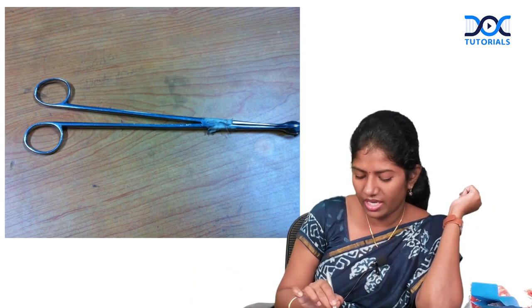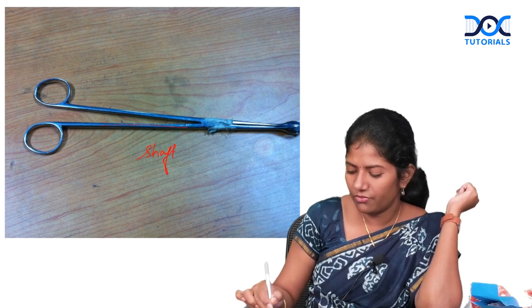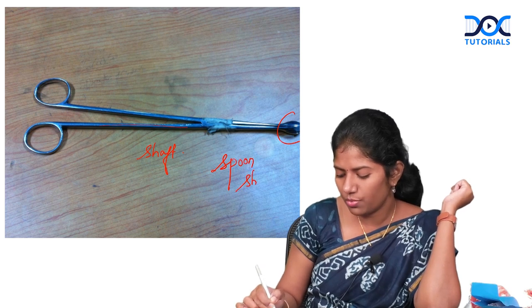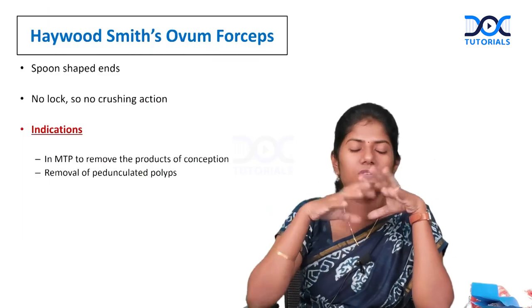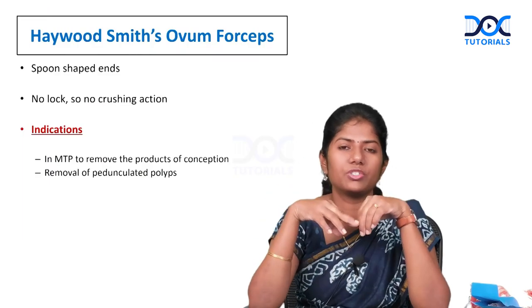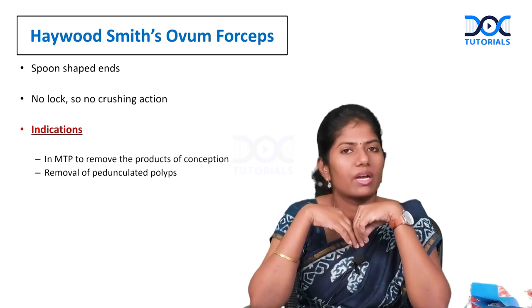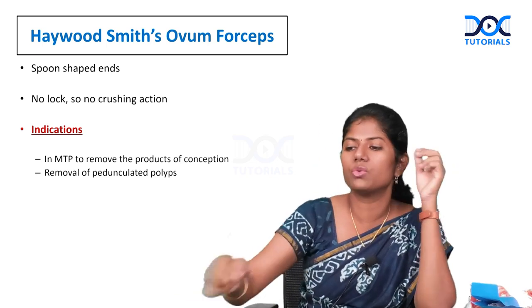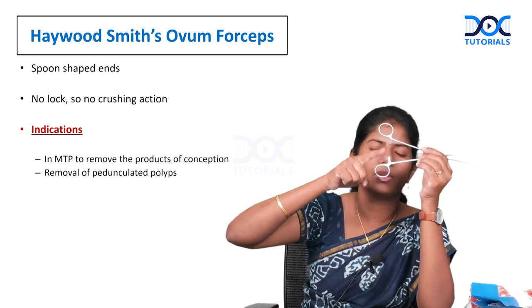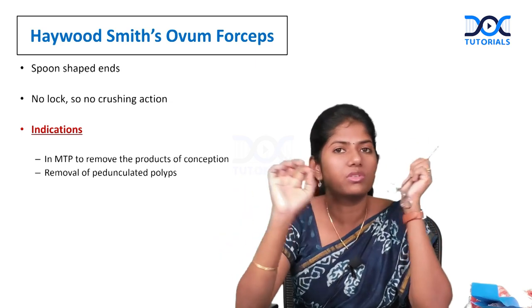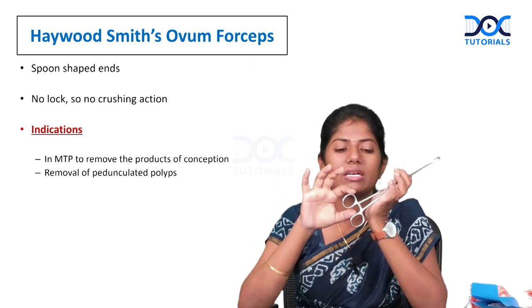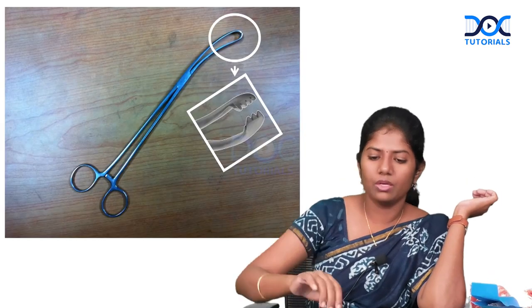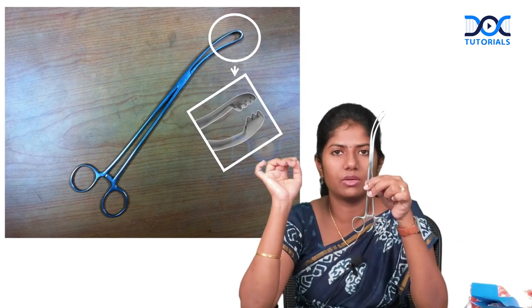Ovum forceps has a central shaft and spoon-shaped ends. It is used to remove retained products of conception and for dilatation and evacuation in MTP. The key difference from sponge holding forceps: sponge holding forceps has a lock whereas ovum forceps does not, so ovum forceps will not crush the tissue.